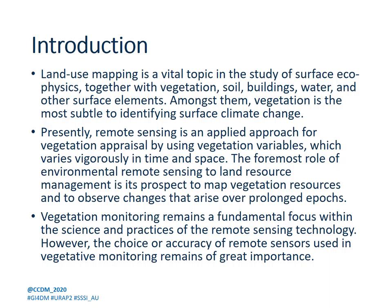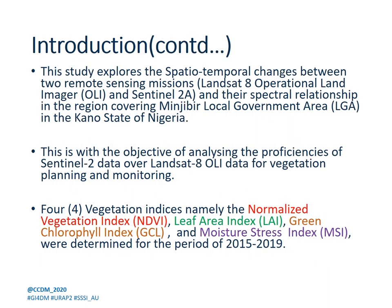Presently, remote sensing provides an applied approach for vegetation monitoring by using vegetation variables which vary vigorously in time and space. The foremost role of environmental remote sensing in land resource management is its prospect to map vegetation resources and to observe changes over prolonged epochs. Vegetation monitoring remains a fundamental focus within the science and practice of remote sensing. However, the accuracy of remote sensing sensors used in vegetation monitoring remains of great importance.